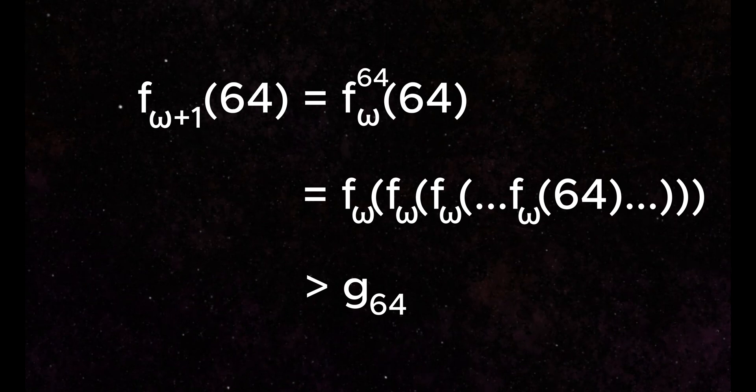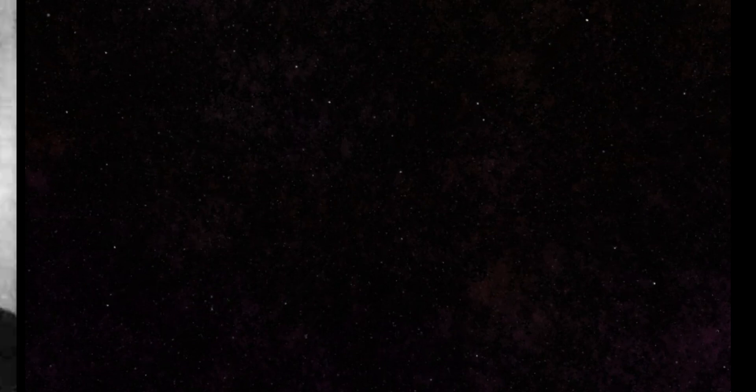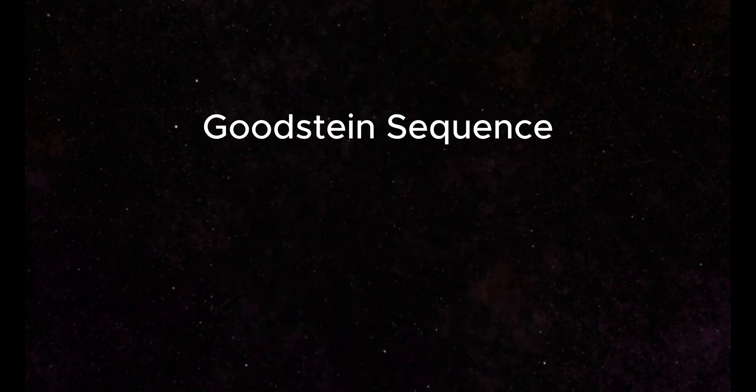In 1944, the mathematician Reuben Goodstein proved a curious theorem involving a number sequence he had developed, called the Goodstein sequence.